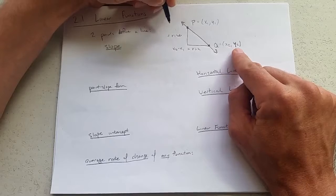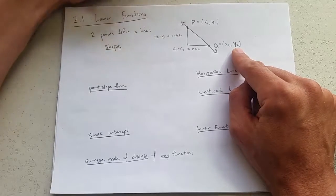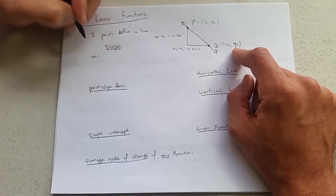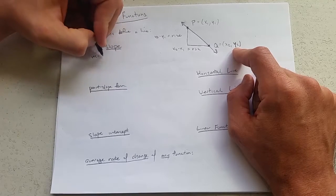Rise, same thing with the y's. y2 minus y1. So slope, we use the letter m. And slope is rise over run.